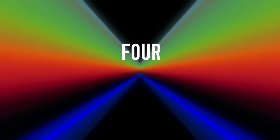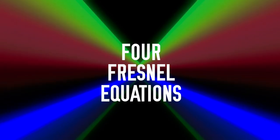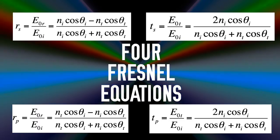In this video, we are going to directly carry on from the previous video where we derived the Maxwell boundary conditions, and we are going to use this to derive the four Fresnel equations. These equations essentially tell us what portion of the light that enters a different refractive index medium gets reflected and what portion gets transmitted through the boundary.